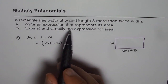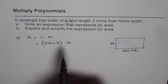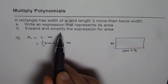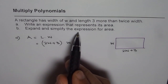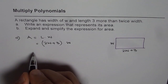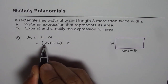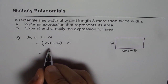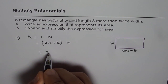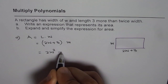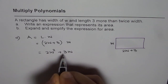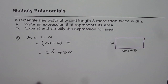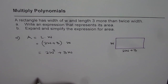That is the expression that represents the area. Now to expand and simplify it, we multiply W by both terms inside, and we get 2W squared plus 3W. That is the simplified form of the expression, and that is our answer.